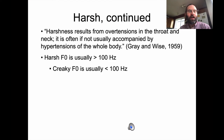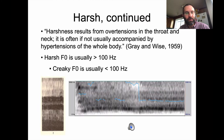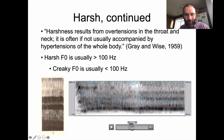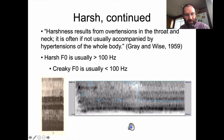That also seems to fit the death metal mold. Harsh F0 is typically above 100 Hz, while creaky voice normally has an F0 below 100 Hz — otherwise they're fairly similar. Here's a diagram of harsh voice from a text, and this is the spectrogram from our friend in the Calgary metal band. It looks similar, with slightly less periodicity — more noise than vocal fold vibration.